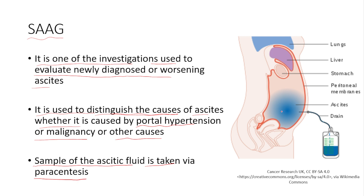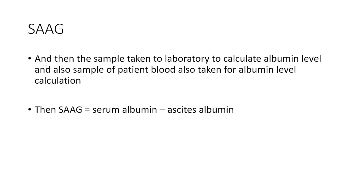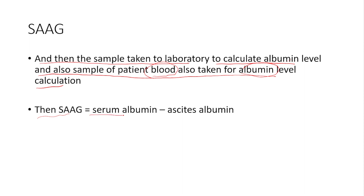This shows the paracentesis procedure — a cannula is placed through the abdominal wall and a drain is placed to drain some of the ascitic fluid for the SAAG to be investigated. The sample is taken to the laboratory to calculate the albumin level, and a sample of the patient's blood is also taken for albumin level calculation.